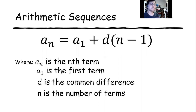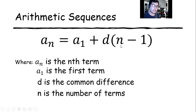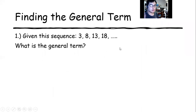Here is the formula. So your a sub n is the nth term, while your a sub 1 is the first term, while your d is the common difference, while your n is the number of terms.